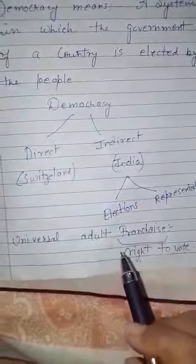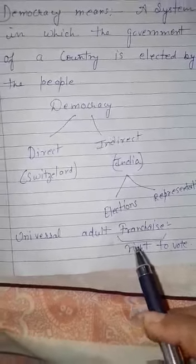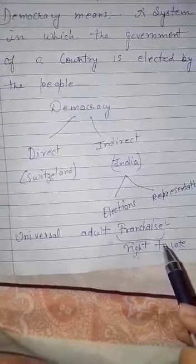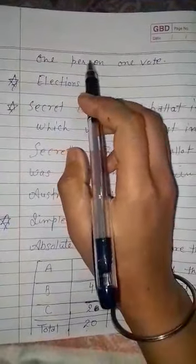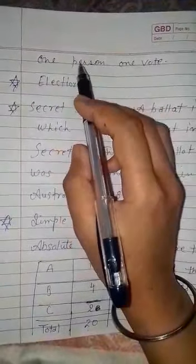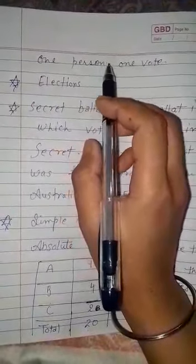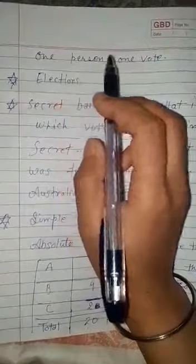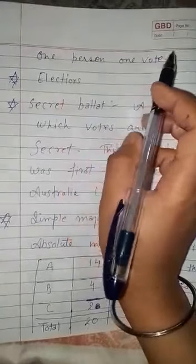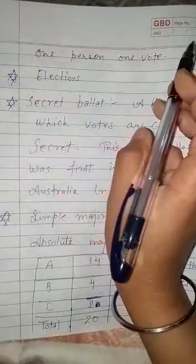An important principle of adult franchise is the rule of one person, one vote. It means in an election, one person can only give one vote.